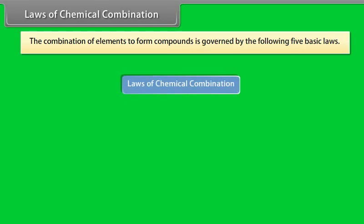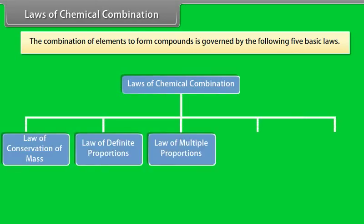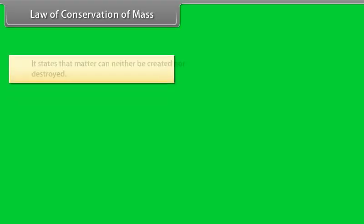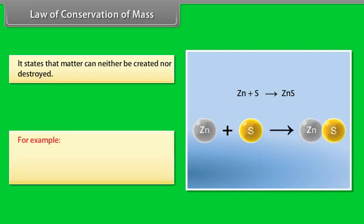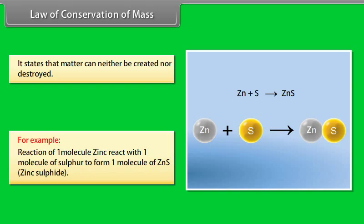Laws of Chemical Combination. The combination of elements to form compounds is governed by the following five basic laws. The first is the Law of Conservation of Mass, which states that matter can neither be created nor destroyed. For example, one molecule of zinc reacts with one molecule of sulfur to form one molecule of zinc sulfide.